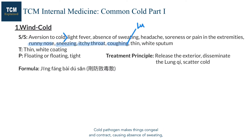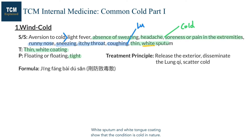Cold pathogen makes things congeal and contract, causing absence of sweating, headache, and soreness or pain in the extremities. Even the pulse may be tight. White sputum and white tongue coating show that the condition is cold in nature. A floating pulse indicates that the body is trying to expel the pathogen from the exterior of the body.